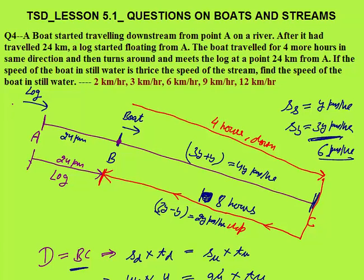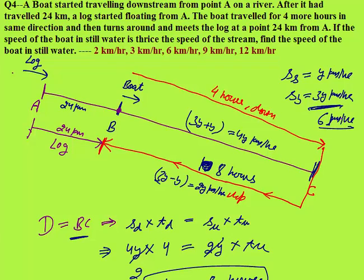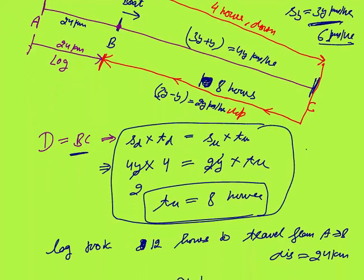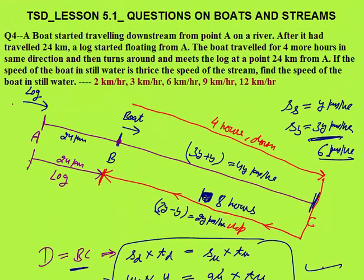Once you make a diagram, this question is very easy and can be solved in 30–40 seconds in the exam. I have taken more time here because I explained everything. In the exam, I would simply use the 4-hours downstream equation and find the answer directly. That was all about lesson 5.1. I hope you learned a lot. Thank you.